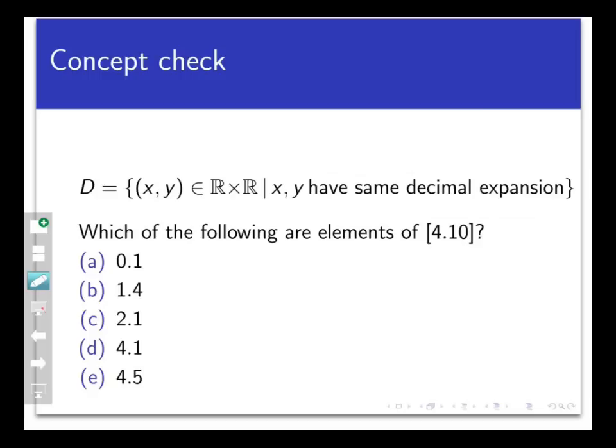So the answer here is A, C, and D. These points are in the equivalence class of 4.10 because they have the same decimal expansion as 4.10. That, of course, is the same thing as 4.1. And having the same decimal expansion means that they are equivalent to 4.1. So in other words,